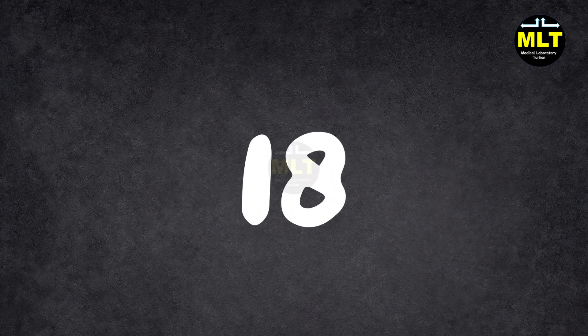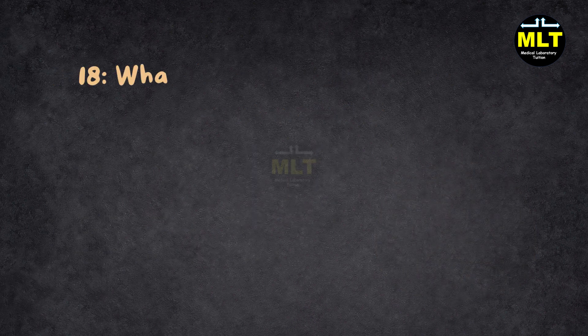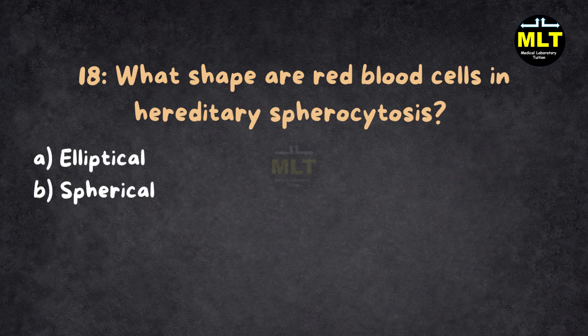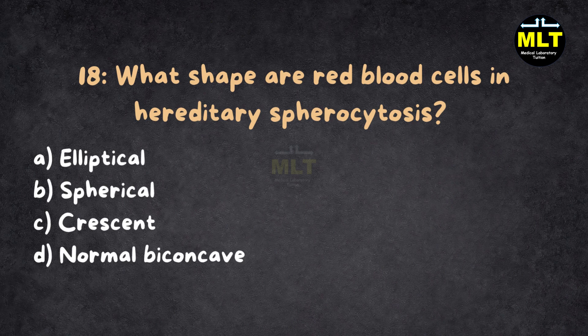MCQ 18. What shape are red blood cells in hereditary spherocytosis? A. Elliptical. B. Spherical. C. Crescent. D. Normal biconcave.